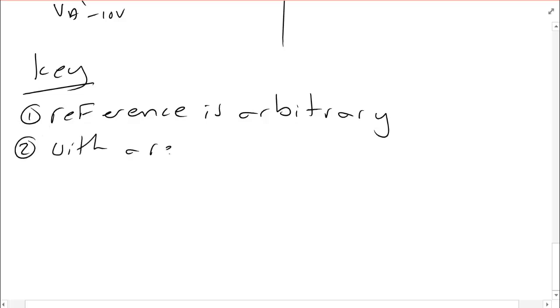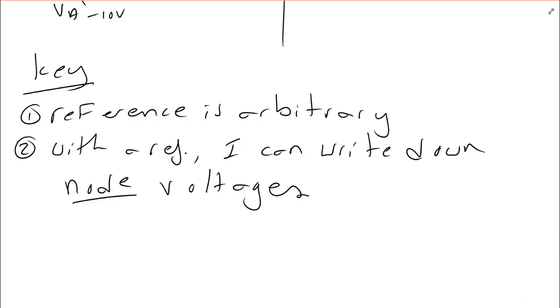Number two, with a reference, I can write down node voltages. What that allows me to do is move away from just the element voltages themselves that I have to specify, and write down voltages of a particular point in the circuit, rather than a voltage across an element.